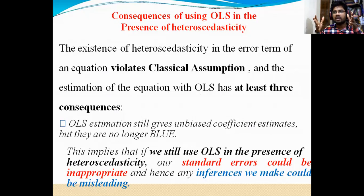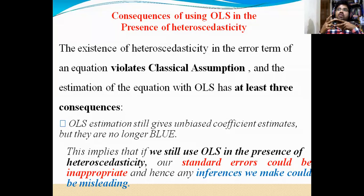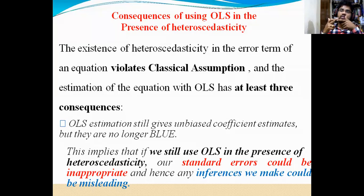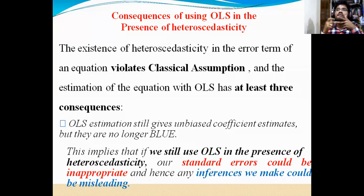When they are providing the wrong standard error values, we will get different T values. If we get T values — for example, two — when the standard error value is very less compared with the coefficient, we will get more than two. When you are getting T values more than two, it is statistically significant at 95%. So when the standard error value is wrong, we are going to get a heteroscedasticity problem.